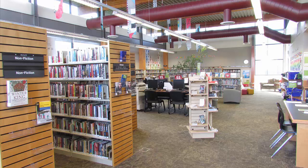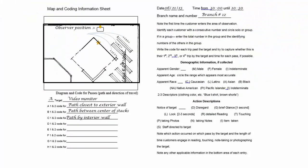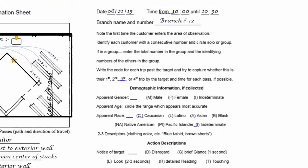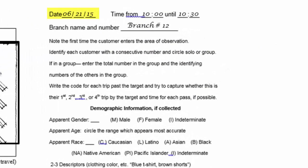Plan the first few observation periods during low traffic times in the library. Begin each observation by entering the date, start and end times, and location on the map and coding sheet.